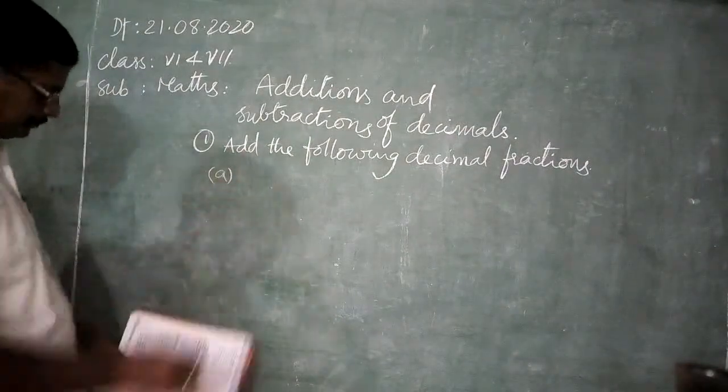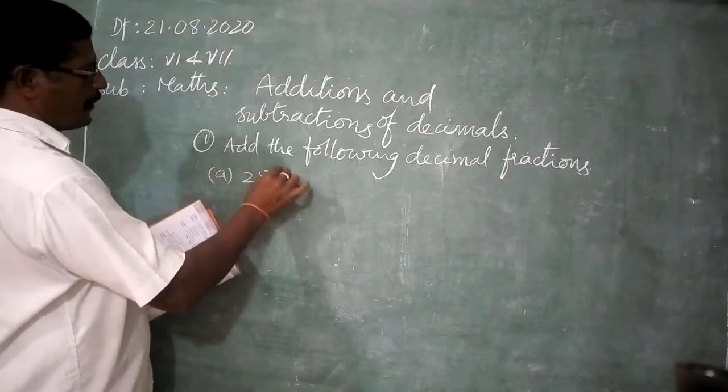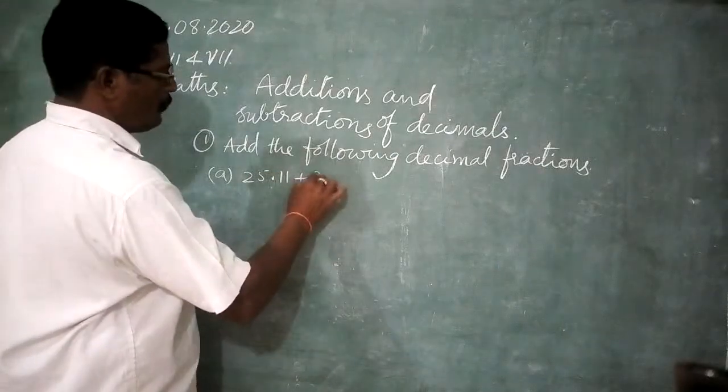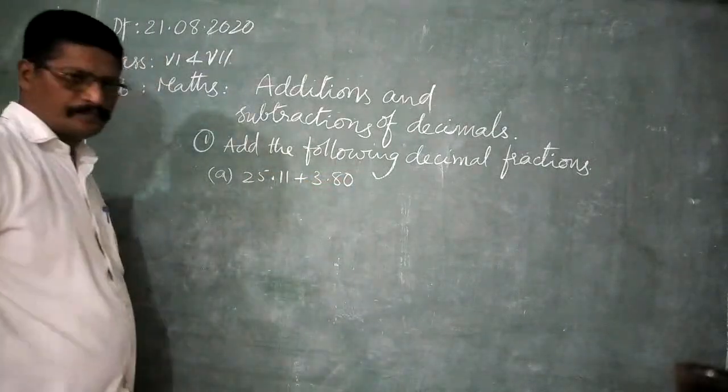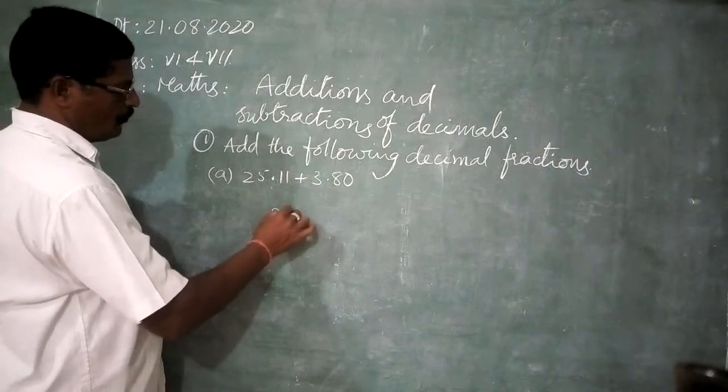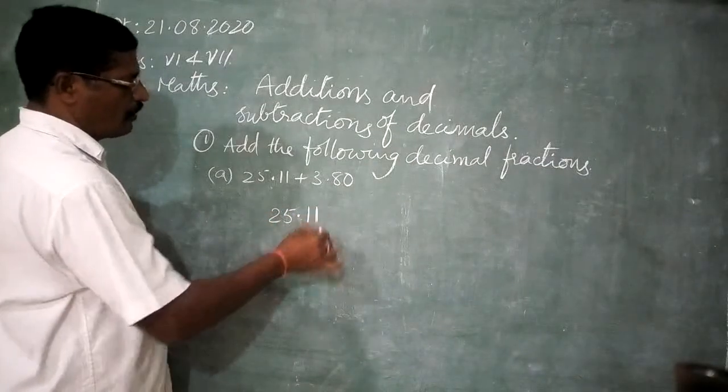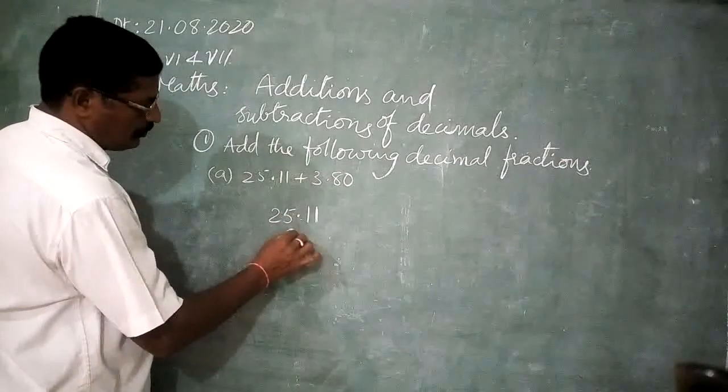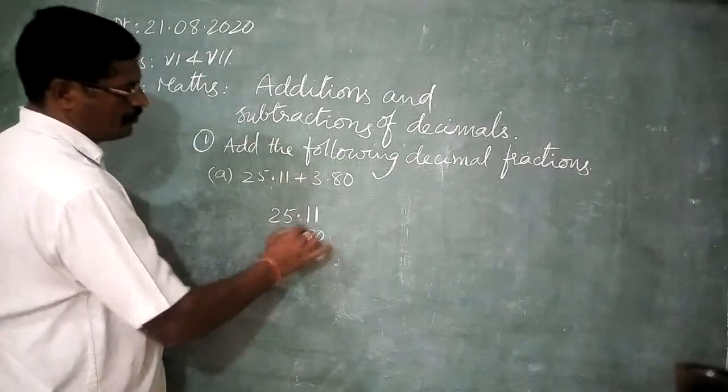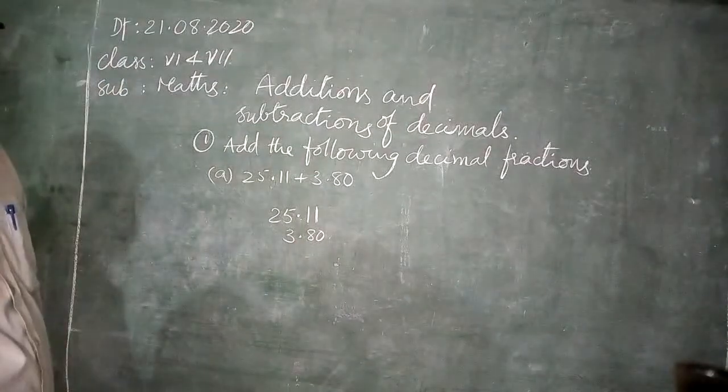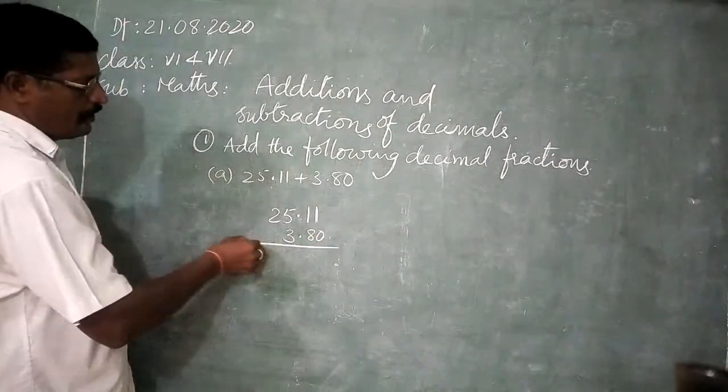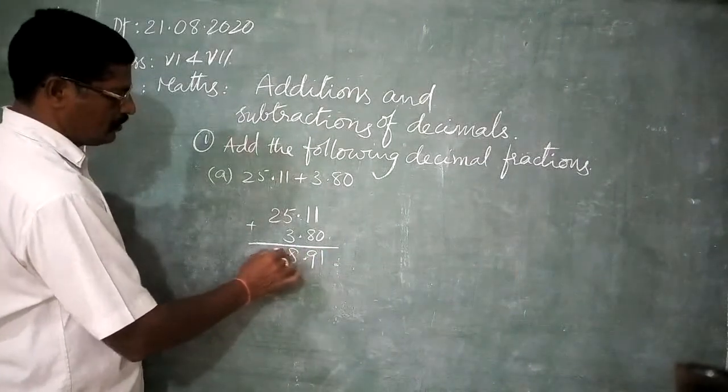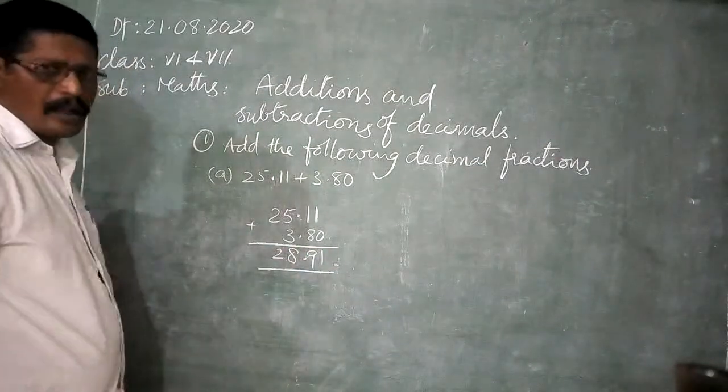25.11 plus 3.80. How to add? First, 25.11. Next, 3.80. Now, we add. Plus, 1, 9, 8, 2. This is the answer.